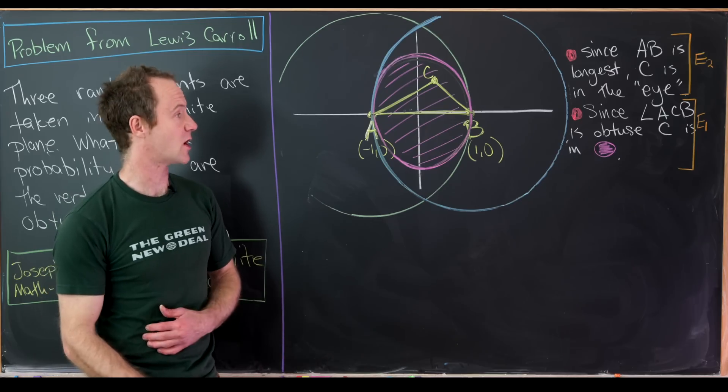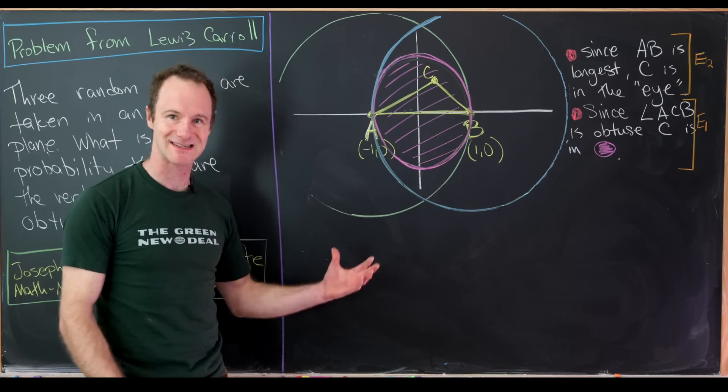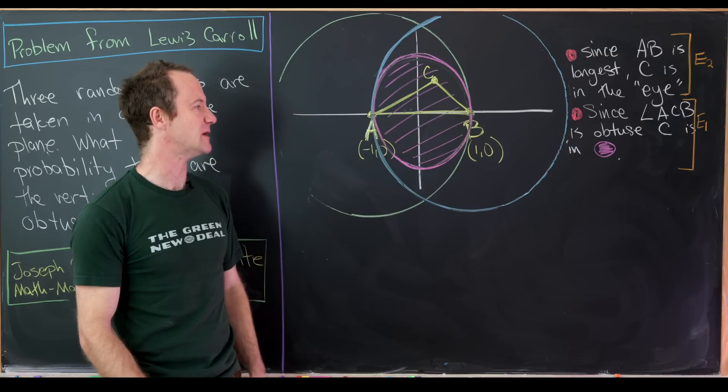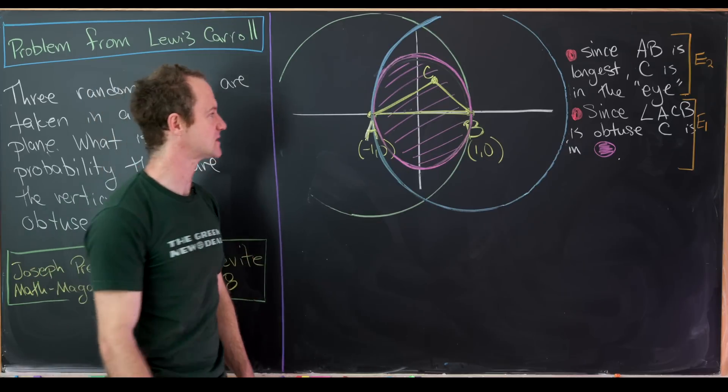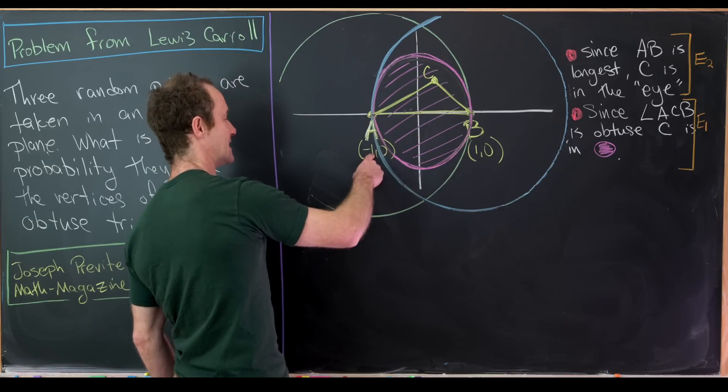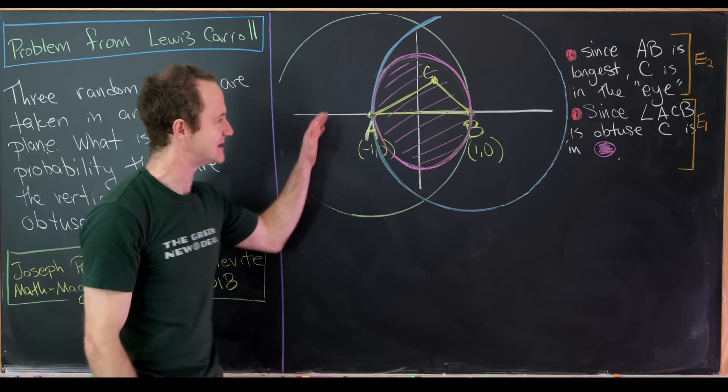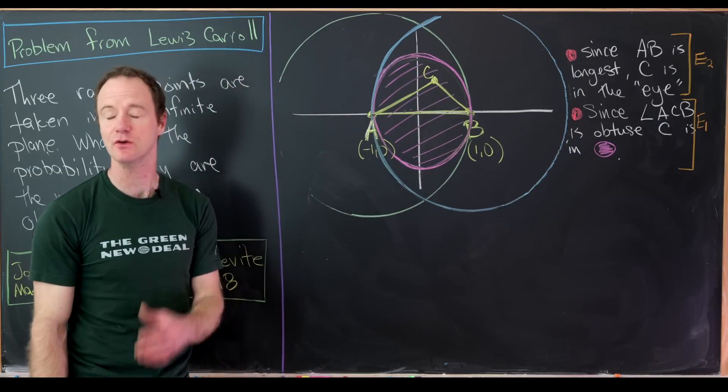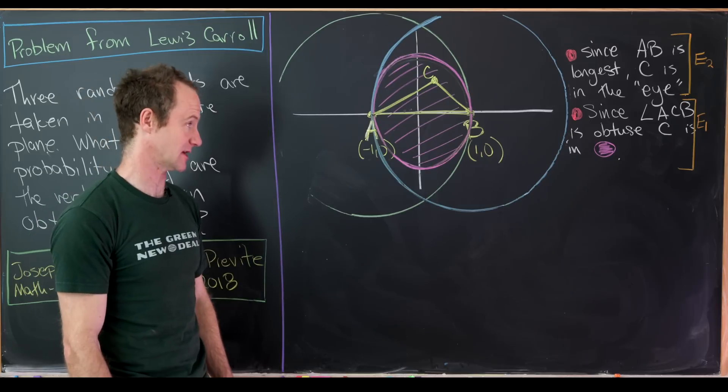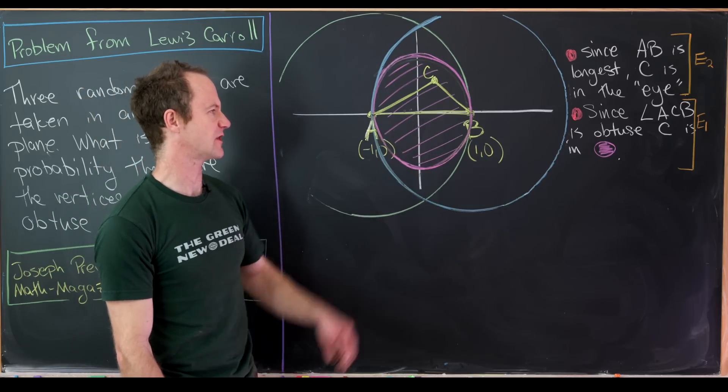So here's our setup onto the board. Notice I scaled everything and I put AB along the x-axis. That means A is at the point negative 1, 0. B is at the point 1, 0. That means AB has length 2, that's after scaling. And I've centered everything at the origin.